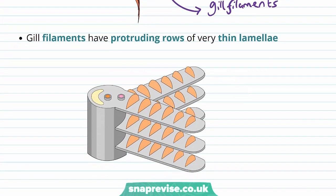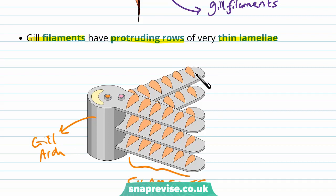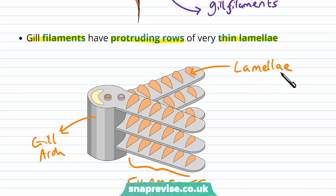If we zoom into the gill filaments, they have extra features on them as well. The gill filaments have protruding rows of very thin lamellae. A lamella is something used in biology to describe something that's quite thin and flat, or that tends to protrude out somewhere. So we've got the gill arch, then the filaments, and then what you can see are these disc shapes sticking out of the filaments and protruding up and down — these are the lamellae. One single structure would be a lamella.